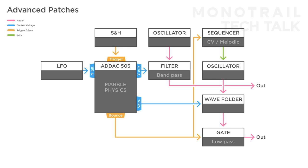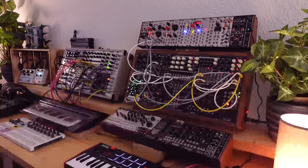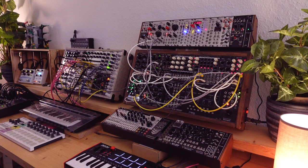Here's a little variation of that patch. A copy of the bounce output is used to clock the sequencer. Now they are no longer out of sync, but the sequencer isn't moving with a steady clock anymore. In addition, a slow looping envelope is used to modulate the elasticity, and the X output is modulating the resonance of the bandpass filter in the drone voice.